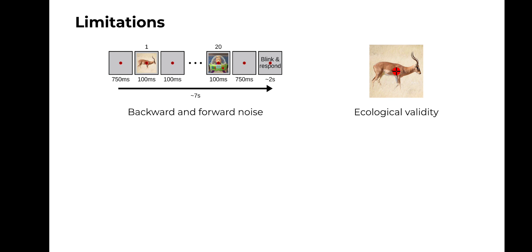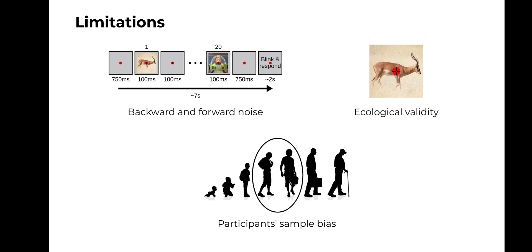Second, the stimuli consisted of objects centered on the image with little to no background clutter, and subjects were asked to constantly gaze at a central fixation target, which is not representative of naturalistic vision. Future data collection efforts could focus on more naturalistic stimuli, such as videos, and more naturalistic experimental designs — for example, allowing for free eye movements. Third, the subject sample is biased towards young adults, which might not be representative of how visual object recognition occurs in infants, children, or the elderly. Future studies could investigate potential age-related differences by collecting large amounts of visual responses from subjects across the lifespan.